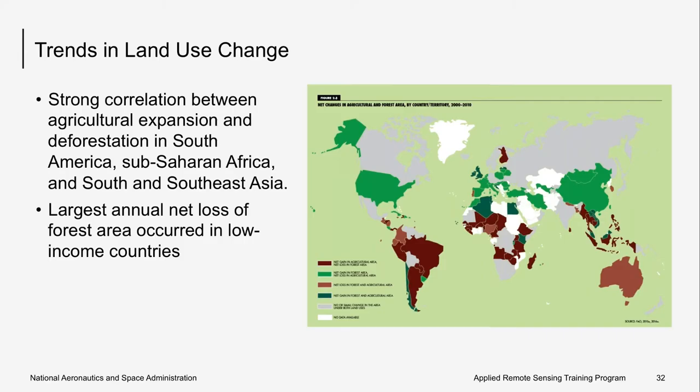There's a strong correlation between agricultural expansion and deforestation, shown in dark red regions on the map. These are areas with a net gain in agricultural area and a net loss in forests, primarily in South America, parts of Africa, and Southeast Asia. The greatest net loss of forests and net gain in agricultural land was in the low-income group of countries, where rural populations are growing. Light green regions show a net gain in forests and a net loss in agriculture, primarily in the US, Europe, and northern Asia.